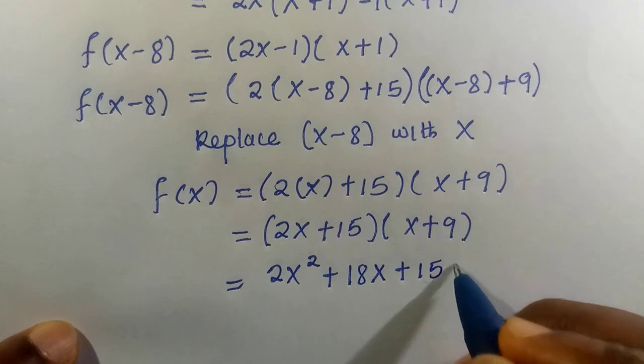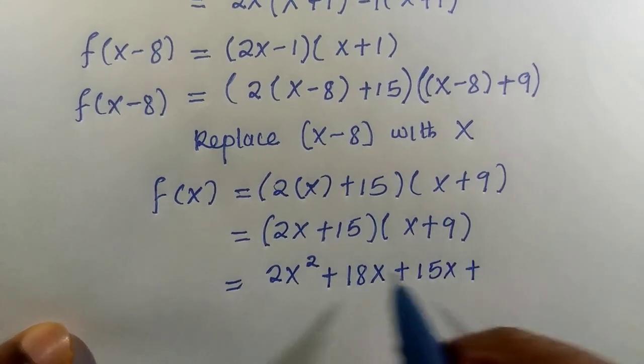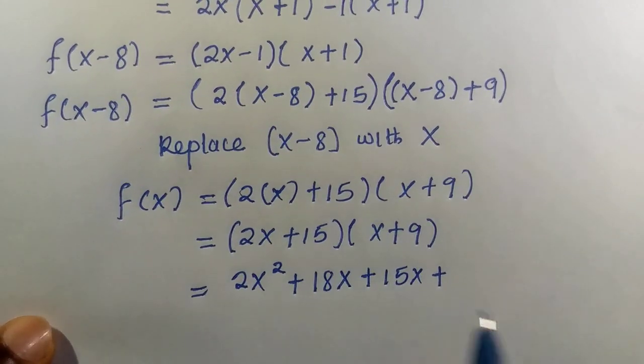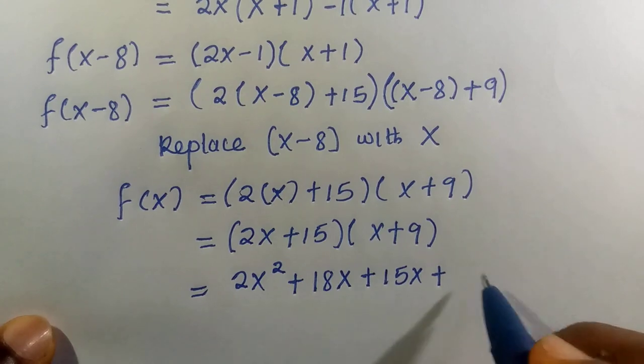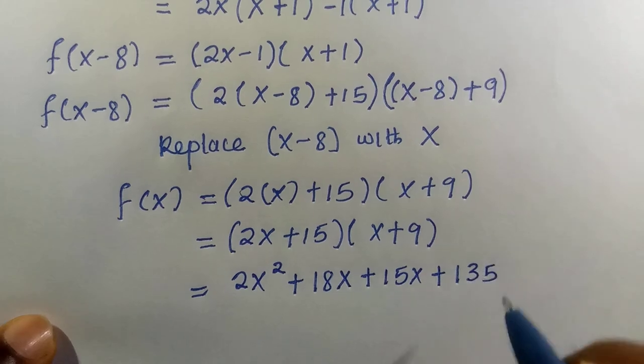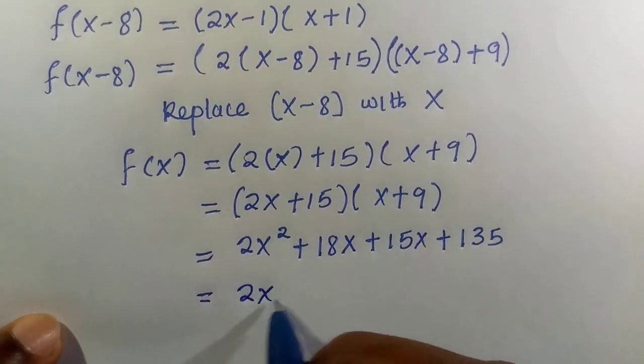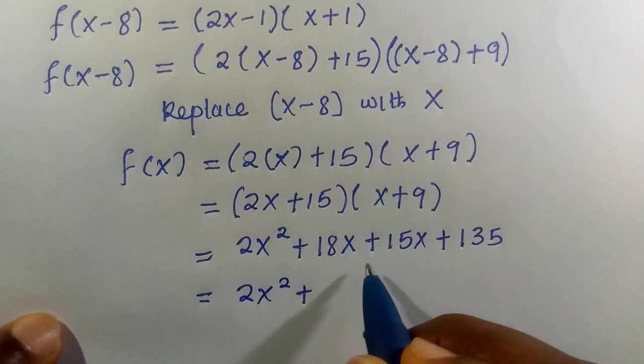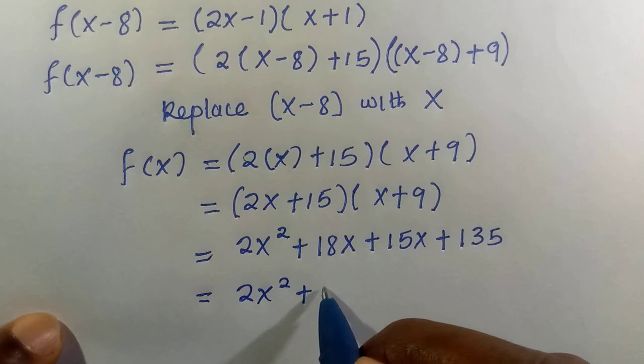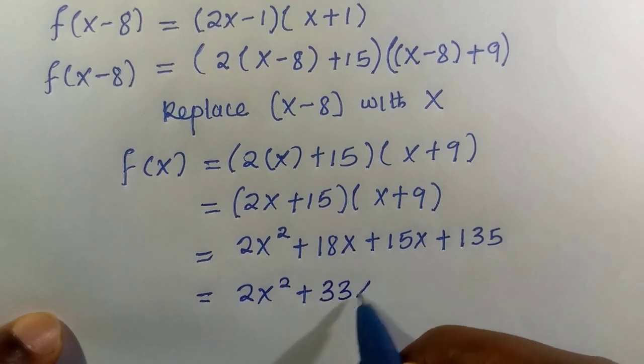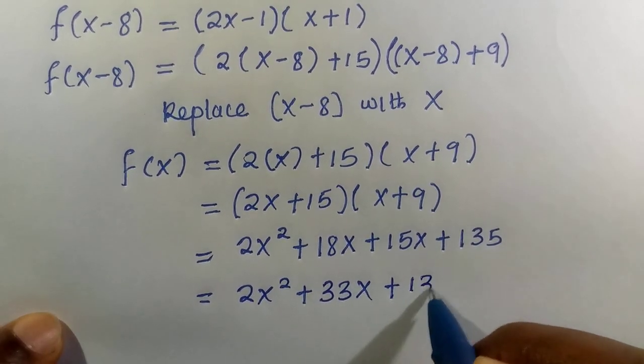Plus 15 multiplied by x is 15x. When we multiply 15 by 9, we get 135. So here we have 2x² + 18x + 15x, which is 33x + 135.